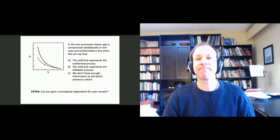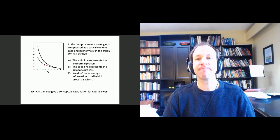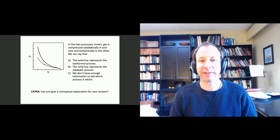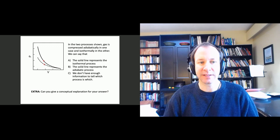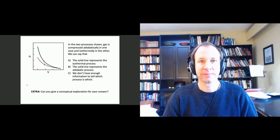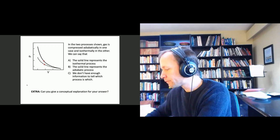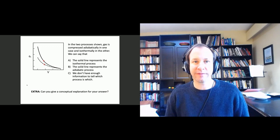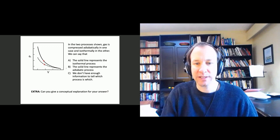Question number one: what does the adiabatic process look like on a graph? Take a minute to read through this question and think about the answer. The question is which one of these lines might represent the adiabatic compression of the gas, and which one represents the isothermal compression. The answer turns out to be B — the solid line represents the adiabatic process.